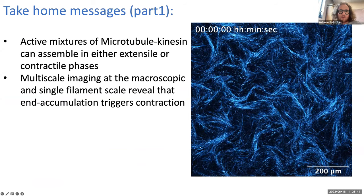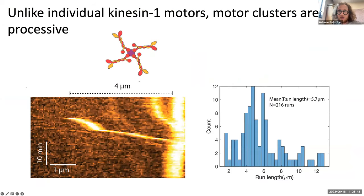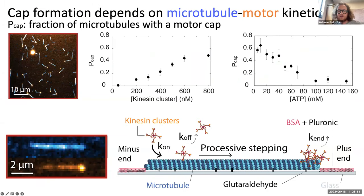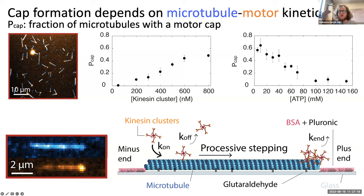Yes, definitely — processivity controls whether motors will end-accumulate or not. You need to compare processivity with the length of the microtubule; that comparison tells you whether you'll get end-accumulation. Processivity depends on the valency of the clusters. We have clusters with more well-defined valency and they're still processive, but you need a much higher k_on to get contraction. So you can play there. The takeaway is that the structure of those clusters — which we never thought much about — is actually very important for understanding their self-assembly at the microscopic scale.